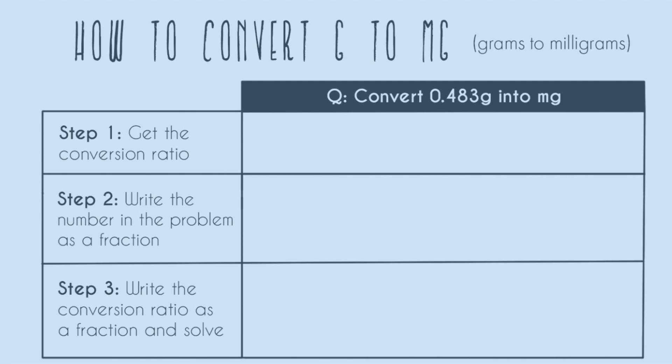In all of these conversion problems, you're going to have two units: the ones that you start in, in this case grams, and the ones that you're asked to end up in, in this case milligrams.